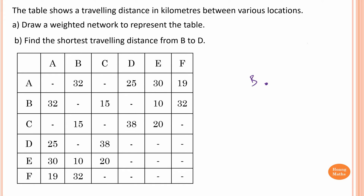So B here. From B to A, E is 32 — I'll just write 32 here. And B to C is 15. Draw not to scale. So 15. And then B to E is 10. E is also connected with A as well, so I'll write it in between. So E here — it's 10.